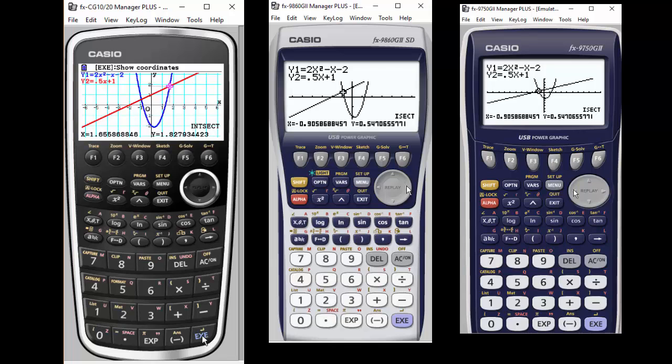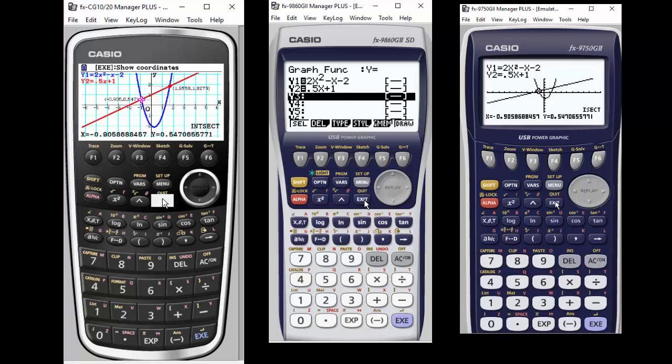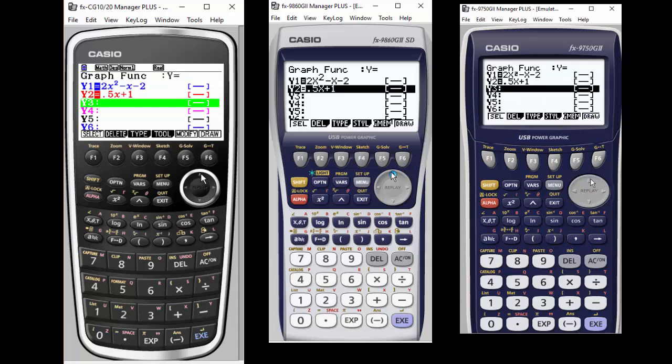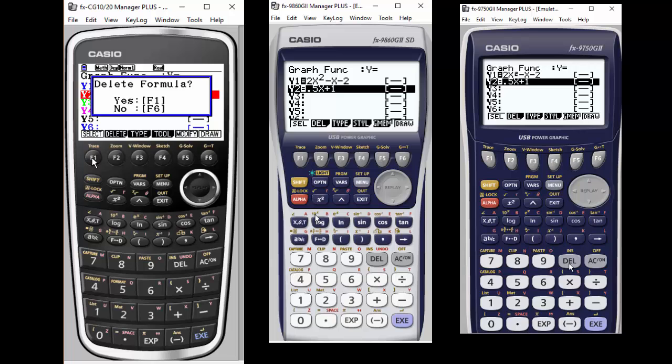The difference with the Casio Prism is that I can actually set those points and show the coordinates on the screen, and I actually see my two graphs in different colors because of the color menu. But functionality-wise, they're pretty much the same.